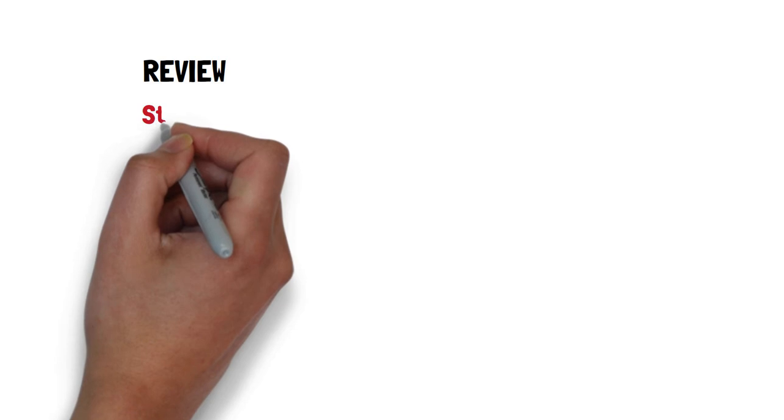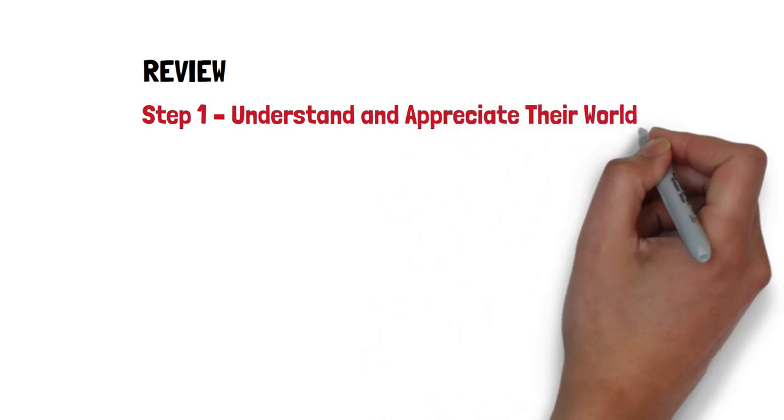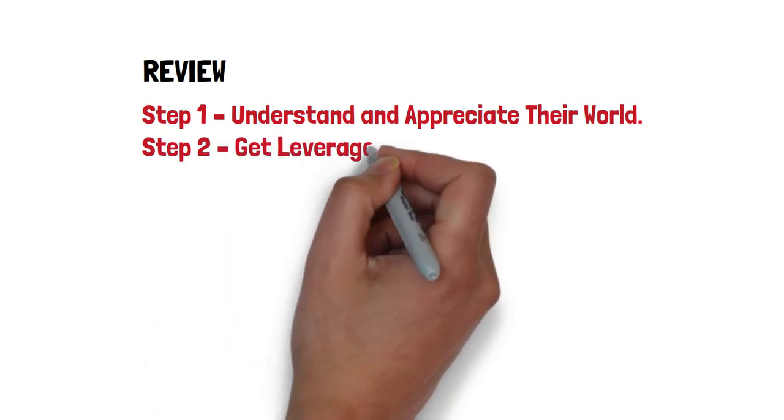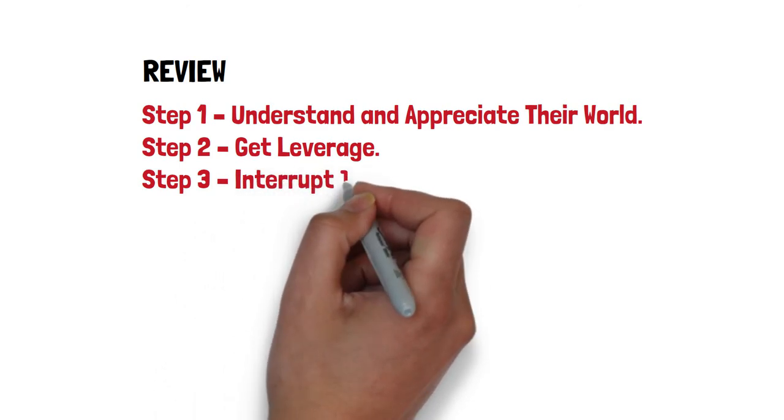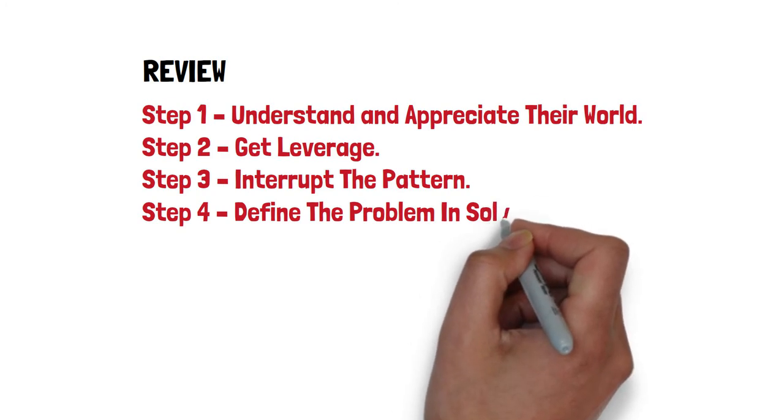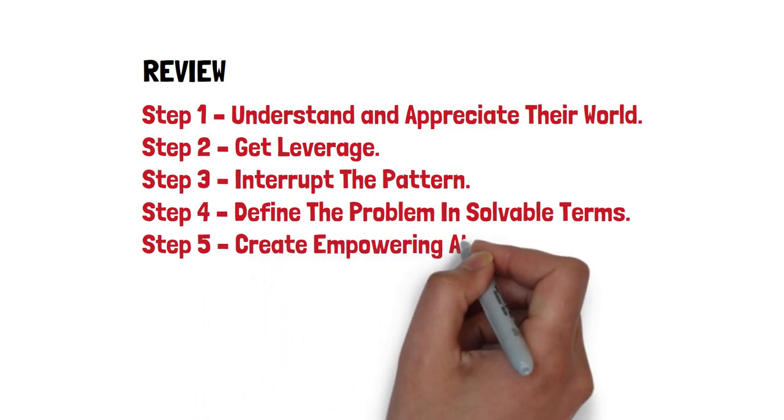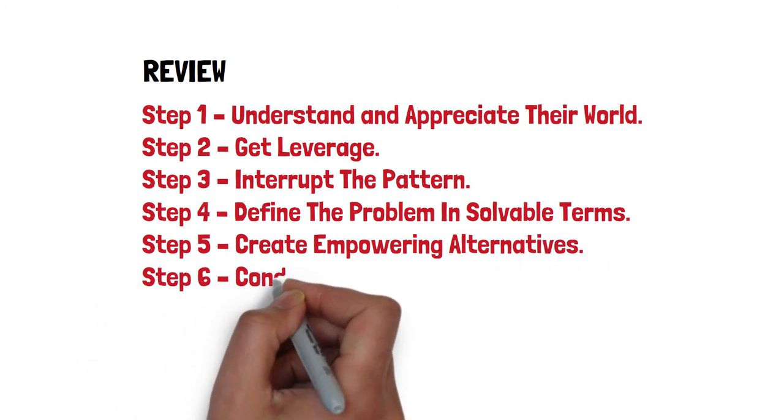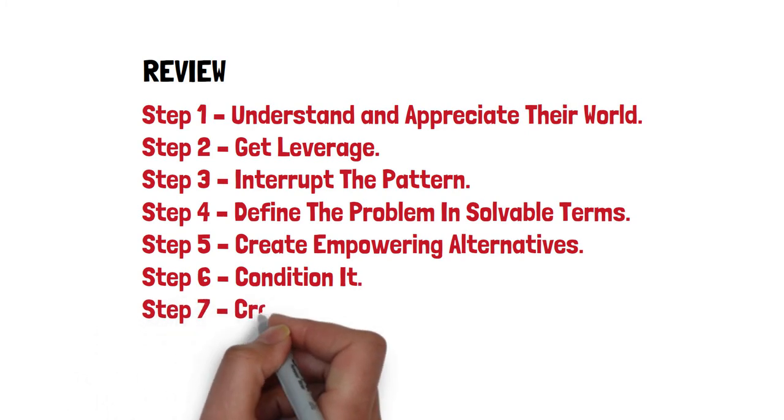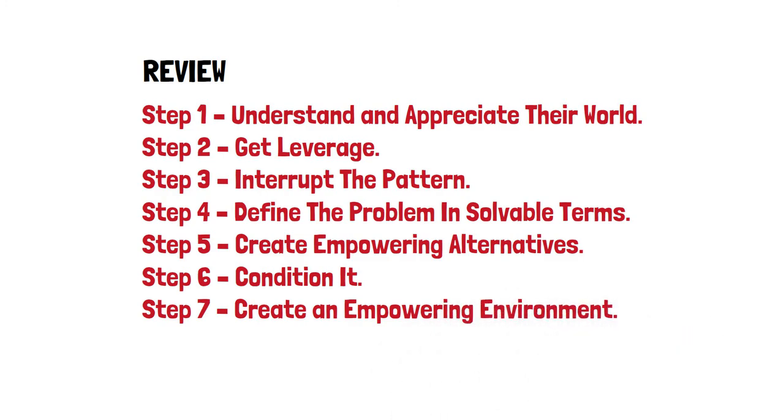So just to review. Step 1, understand and appreciate their world. Before you can influence yourself or others, you must learn what influences yourself or them. Step 2, get leverage. Before you change or get a person to change, you must first find the leverage that will impact them. Step 3, interrupt the pattern. Before you change a habit, you must first interrupt the pattern of our daily lives. Step 4, define the problem in solvable terms. The problem of doing something that is not empowering, you must first be able to define in a way which allows you to see it as solvable. Step 5, create empowering alternatives. You can't just stop a habit. It must be replaced with something else, but you must be careful what you change it with. Make it empowering. Step 6, condition it. Once you have created and started an empowering alternative, you must condition it to prevent you from turning back to your older ways. Step 7, create an empowering environment. And to finally create lasting change, you must look at your environment and make it support your new empowering way of life.